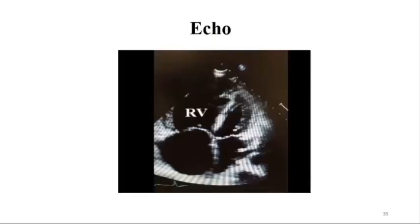This is a patient of ours with pulmonary hypertension. You can see septal bounce and enlargement of the right atrium. The right ventricle is clearly larger than the left ventricle. Sometimes it can even affect cardiac output of the left ventricle. This was an advanced case.